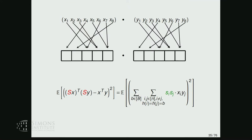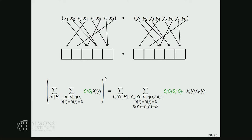Our task is to compute the variance. The variance is the expected squared deviation from the mean, and as we saw, the deviation from the mean is exactly this sum of cross terms over all buckets. So we square the sum and hope for the best.